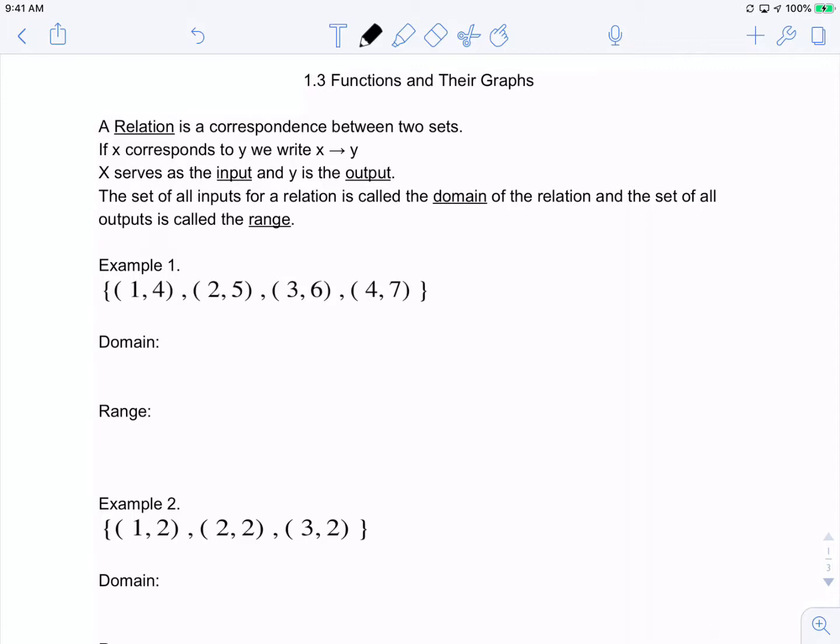A relation is a correspondence between two sets. If x corresponds to y, we write it with an arrow going from x to y. X serves as the input and y is the output. The set of all inputs for a relation is called the domain, and the set of all outputs is called the range. This is important for us to understand and use.